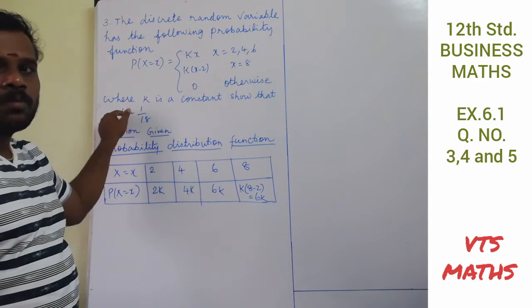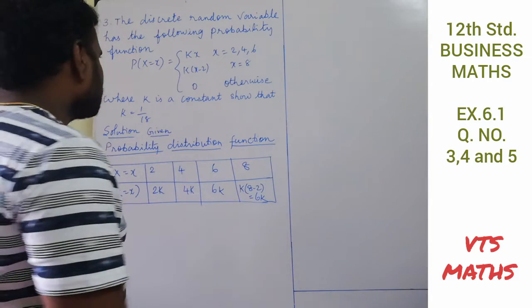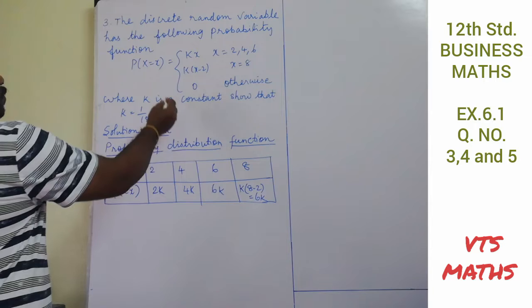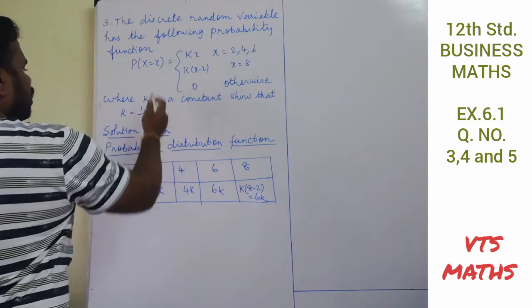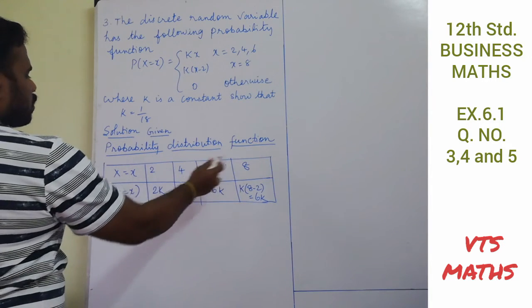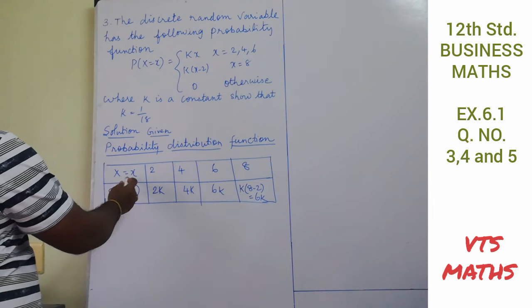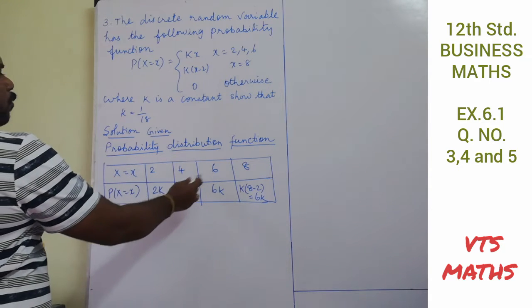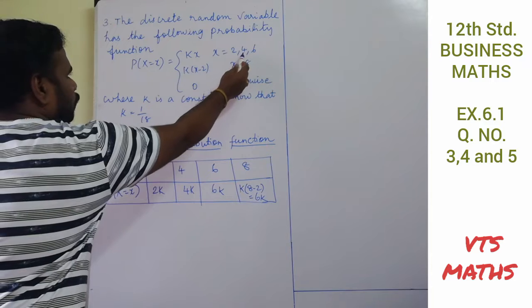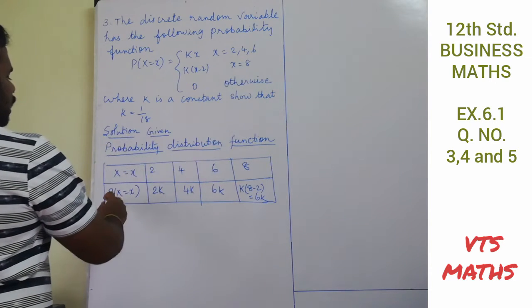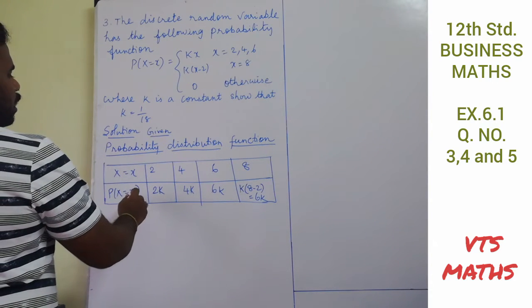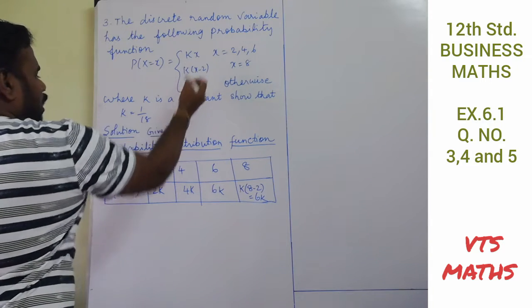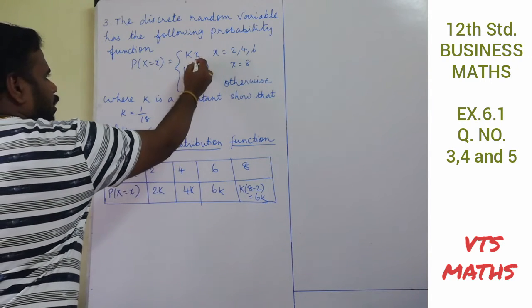We set up a probability distribution table with x values 2, 4, 6, 8. For x = 2, substituting into kx gives 2k. For x = 4, substituting gives 4k. For x = 6, substituting gives 6k.